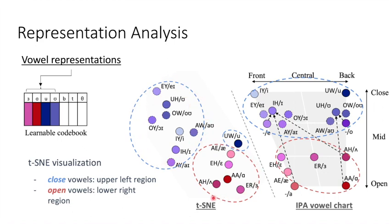We can see that the close vowels group at the upper left region of the t-SNE plot. In contrast, the open vowels located at the lower right region. The representation visualization is parallel to the IPA vowel chart. This demonstrates the learned representations contain a certain degree of phonetic information.